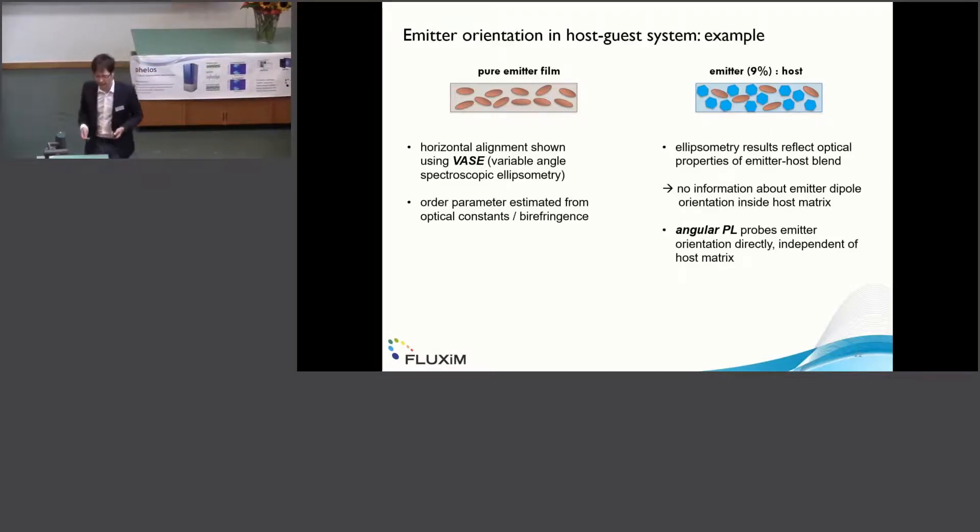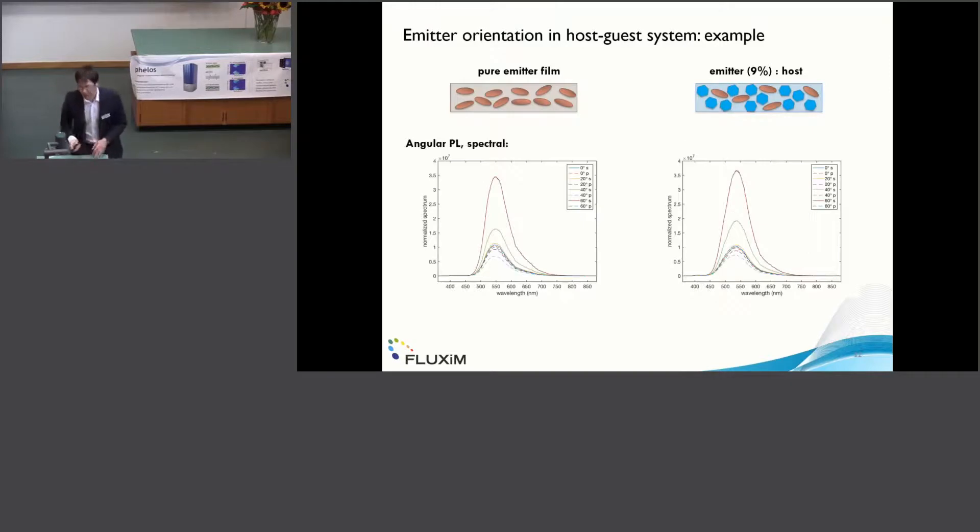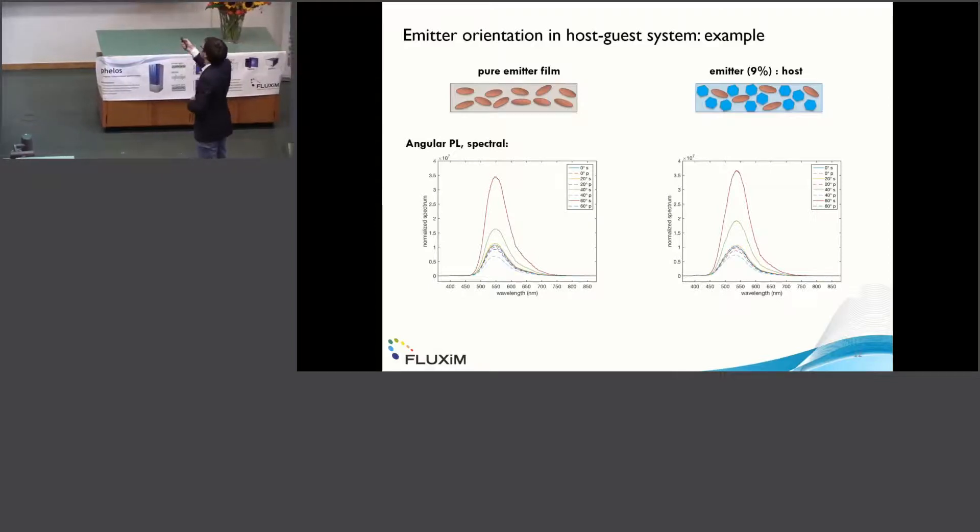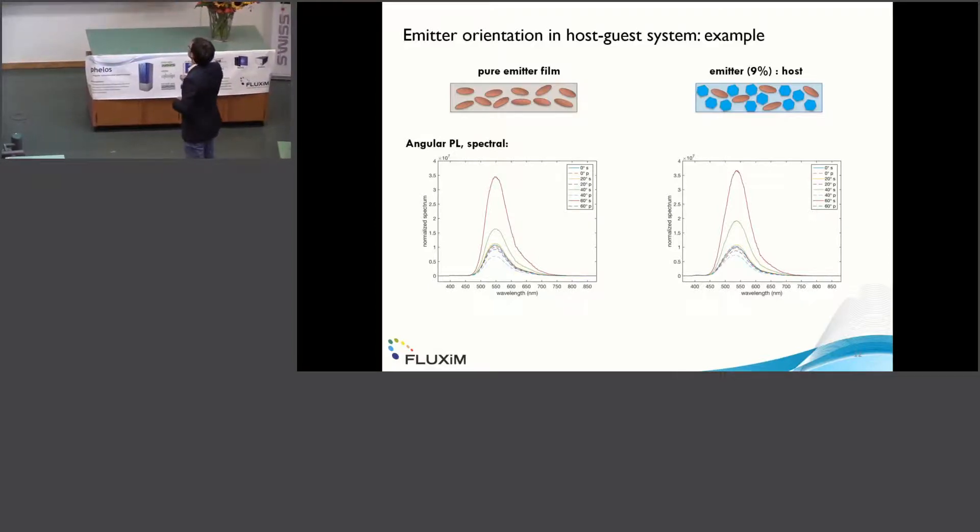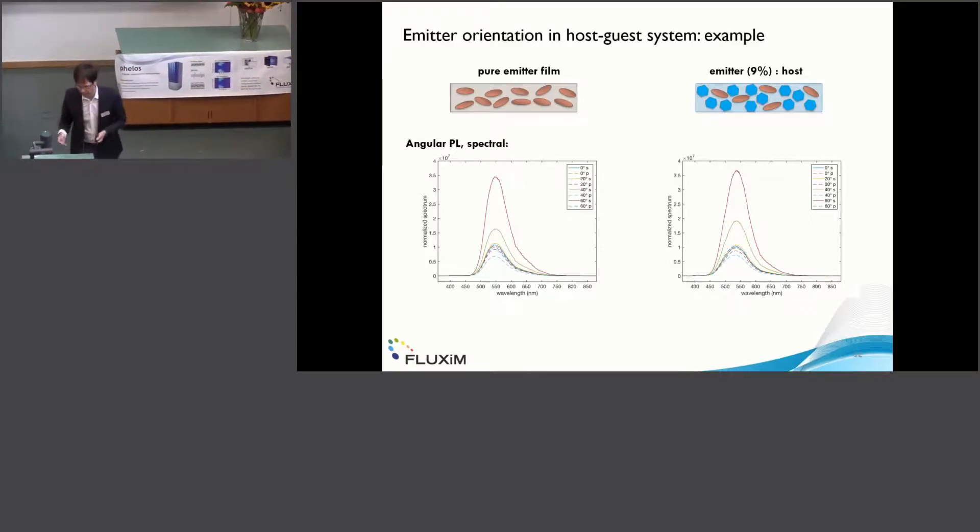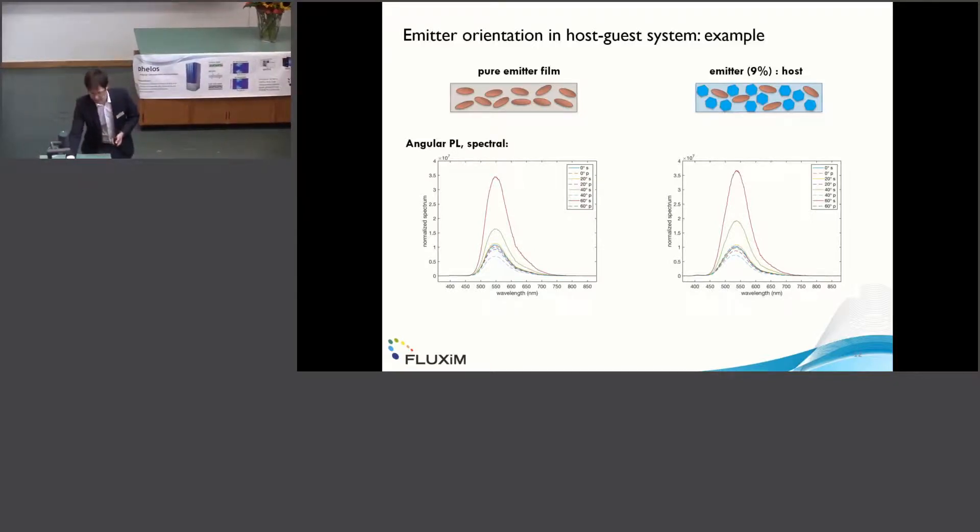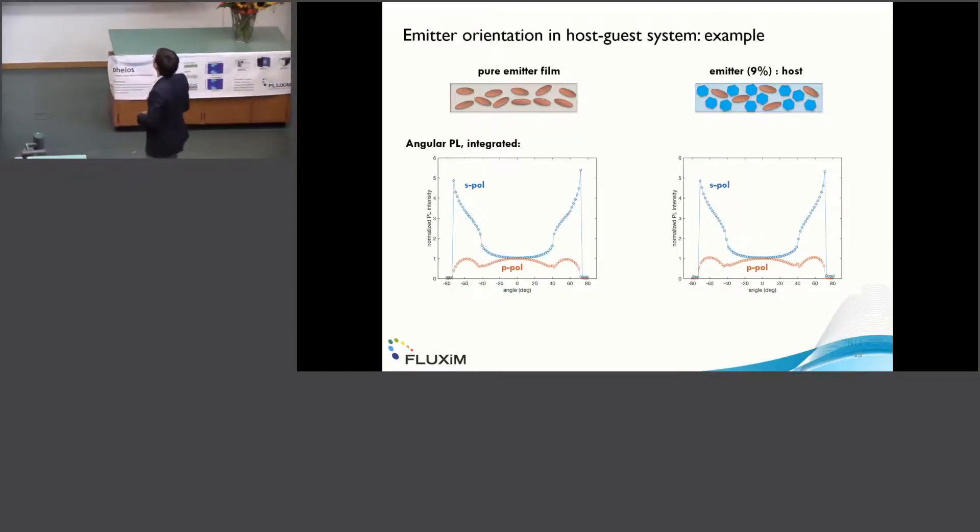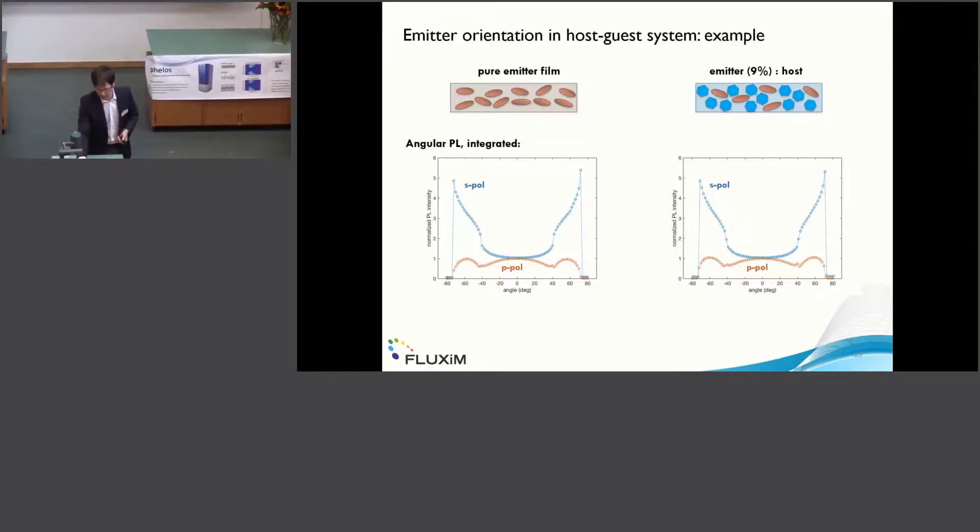This is some example of the measured signal from VELOS. We have the spectrum as a function of the S and P-polarized light and as a function of the angle. We can integrate the spectrum to see the PL intensity, and this looks very similar to the patterns I showed you on my slide before.